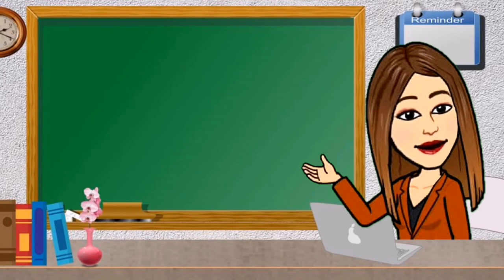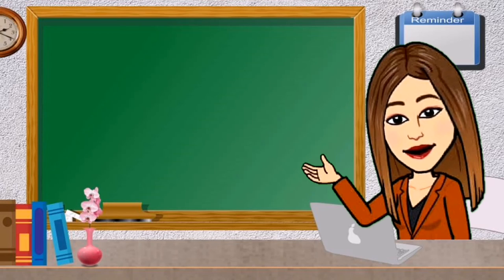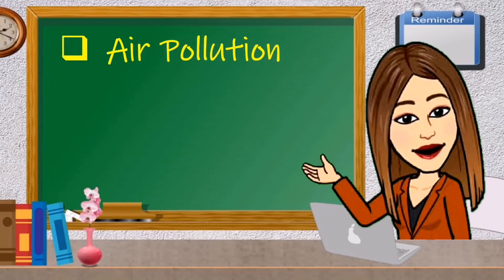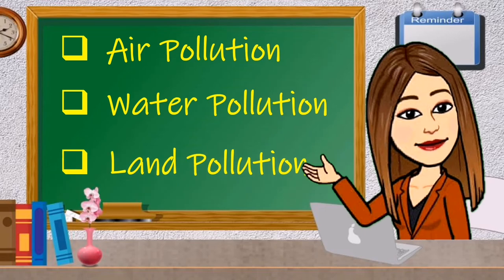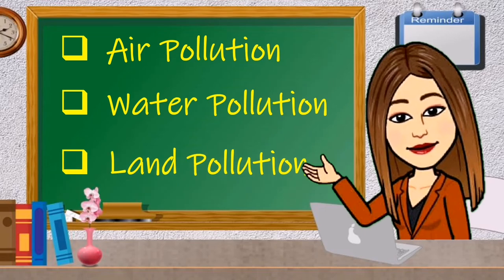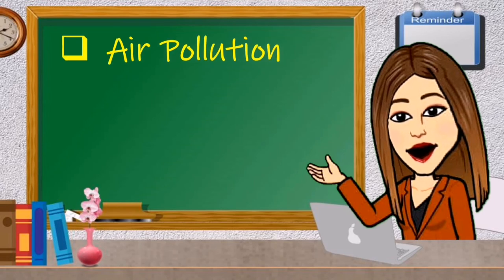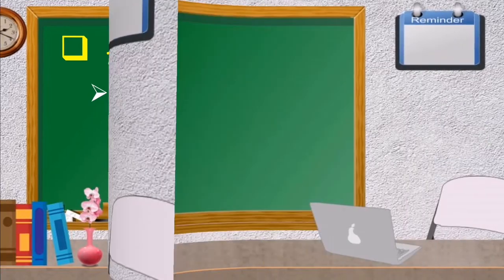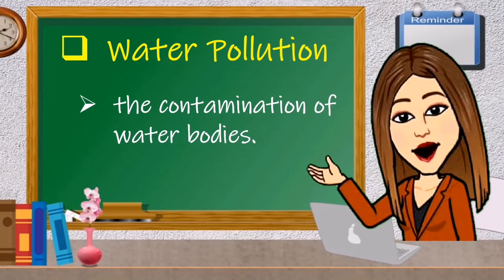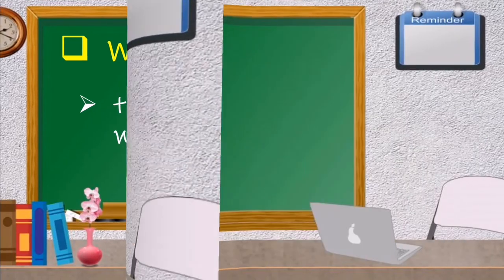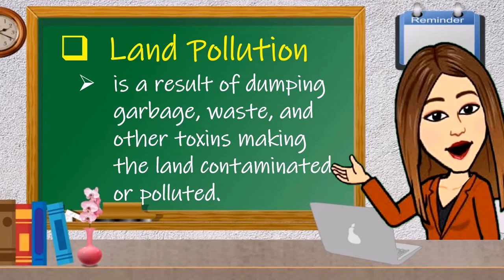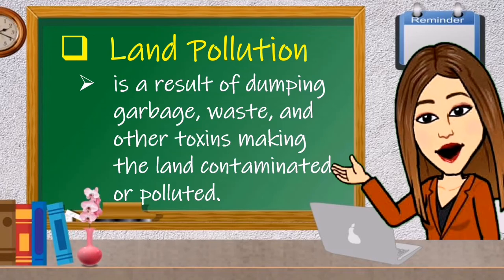Changes in materials may cause useful or harmful effects to one's environment. The harmful effects of changes in the environment are oftentimes caused by human activities. There are three kinds of pollution: air pollution, water pollution, and land pollution. When the surrounding air is blanketed with smoke, it is called air pollution. Water pollution is the contamination of water bodies. Land pollution is a result of dumping garbage, waste, and other toxins, making the land contaminated or polluted.